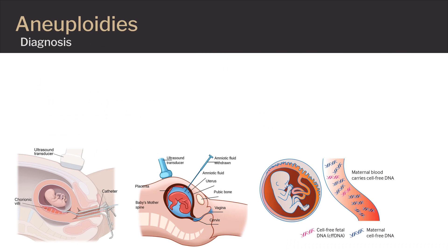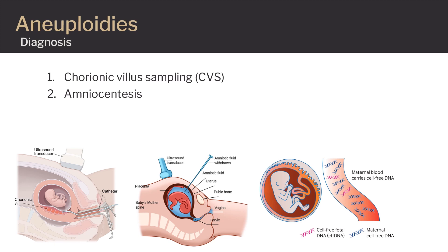Three tests can diagnose fetal aneuploidy during pregnancy. The first is chorionic villus sampling (CVS), usually performed during the first trimester, in which your healthcare provider takes a small sample of cells from your placenta to test for genetic conditions. The second is amniocentesis, which checks for aneuploidy, sometimes other genetic conditions, and a few congenital defects; it's done starting at 15 weeks, typically by 20 weeks, using a small sample of amniotic fluid. The third is non-invasive prenatal testing, usually at 10 weeks, in which your healthcare provider draws a blood sample to assess whether your baby is at increased risk of an aneuploidy condition.